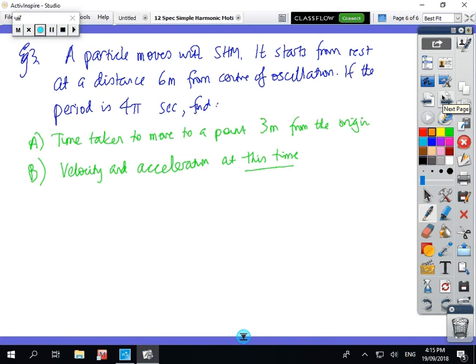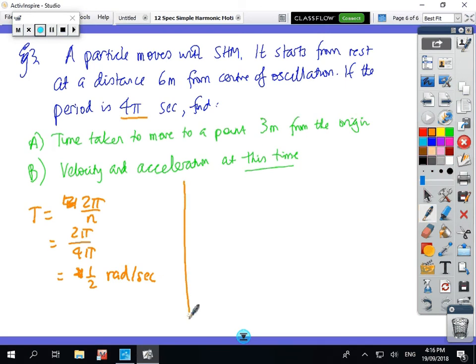Particle moves with simple harmonic motion. It starts from a distance of 6 meters from the center of the oscillation. Period is 4π. So first thing we do: let's work out what N is. 2π/N equals 2π/4π, so that's equal to a half radians per second. So we've got A equals 6 when t equals 0.